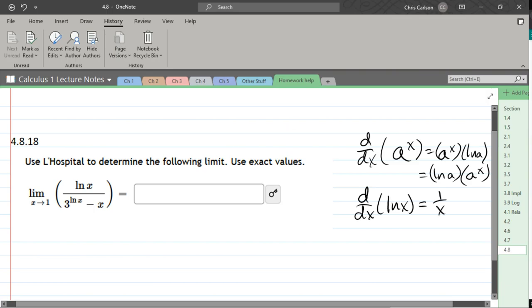Before we apply L'Hopital's rule, we've got to make sure that it actually applies here. So we're going to plug in x equals 1. So that's ln of 1 divided by 3 to the ln of 1 minus 1.